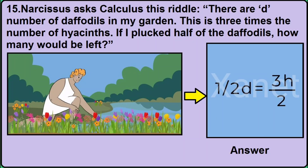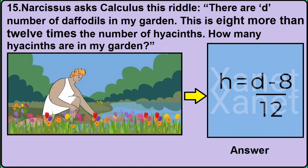Now in version 2, it is written: 'this is 3 times the number of hyacinths — if I plucked half of the daffodils how many will be left?' Then the correct answer will be (1/2)D = 3H/2 in the option. Now in version 3, it is asked: 'this is 8 more than 2 times the number of hyacinths — how many hyacinths are in the garden?' Then you need to click the option in which it is written H = (D − 8) / 2.